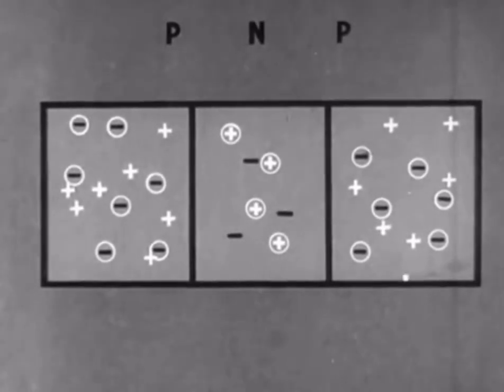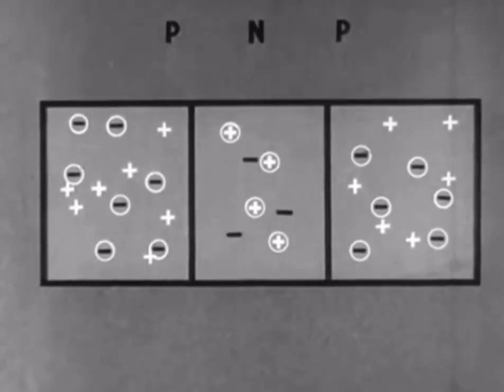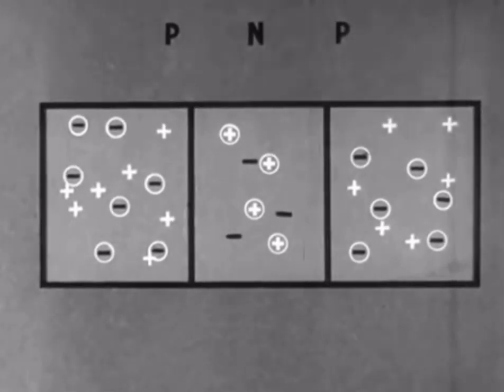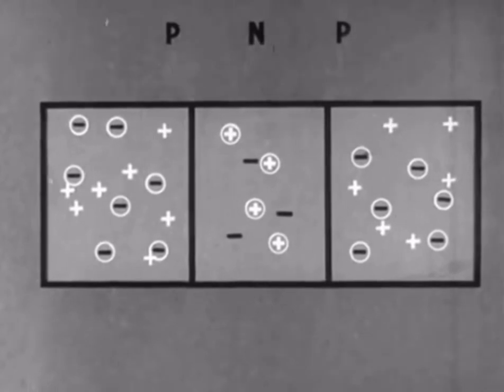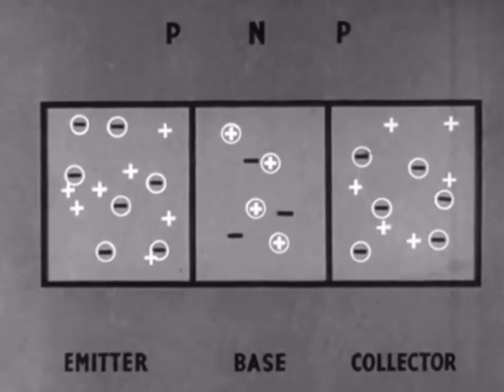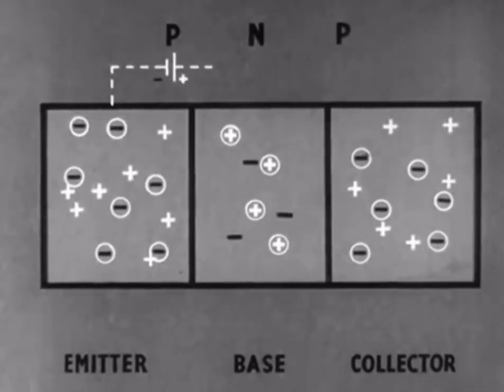This diagram shows a piece of N-type germanium sandwiched between two pieces of P-type germanium. The P-type on the left is known as the emitter. The N-type in the middle, the base. And the P-type on the right, the collector. As before, we can represent the charges on the three components by imaginary batteries.